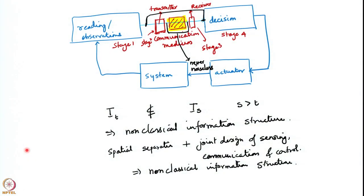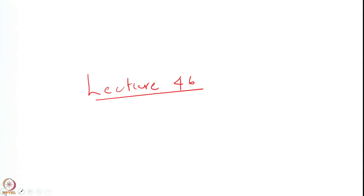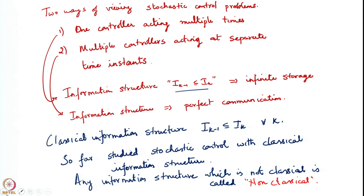Welcome everyone. In the previous lecture I was talking about information structures in stochastic control. I mentioned that the kind of problems we have considered so far all involved what we called classical information structure — one where the information known in the past is also available to us in the future. Any information structure which is not classical is called non-classical.